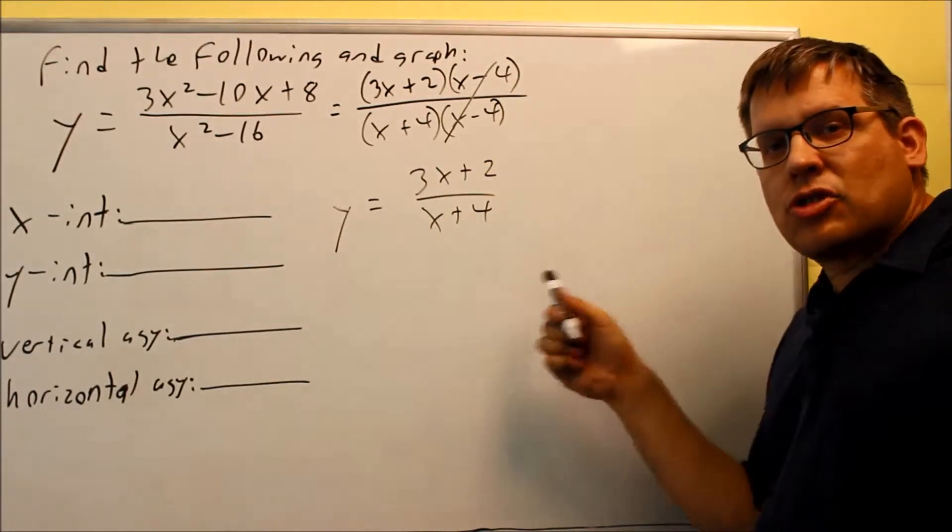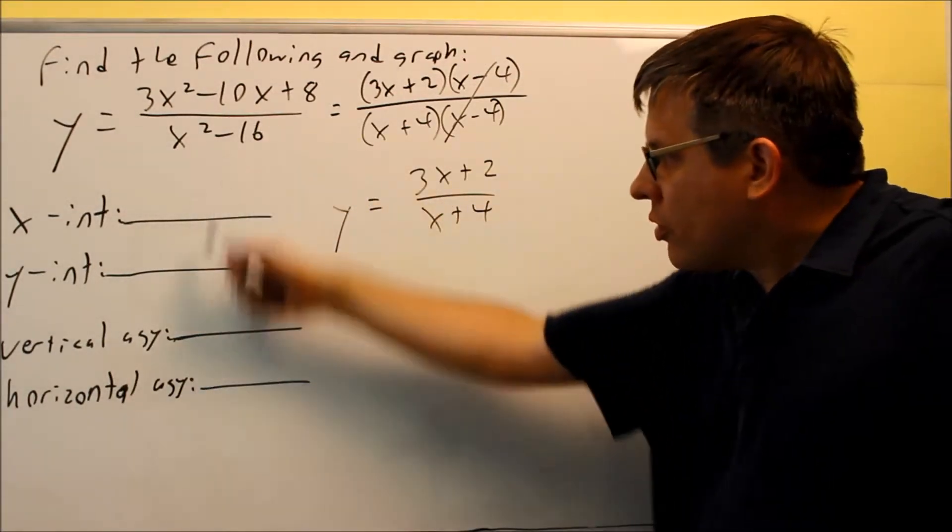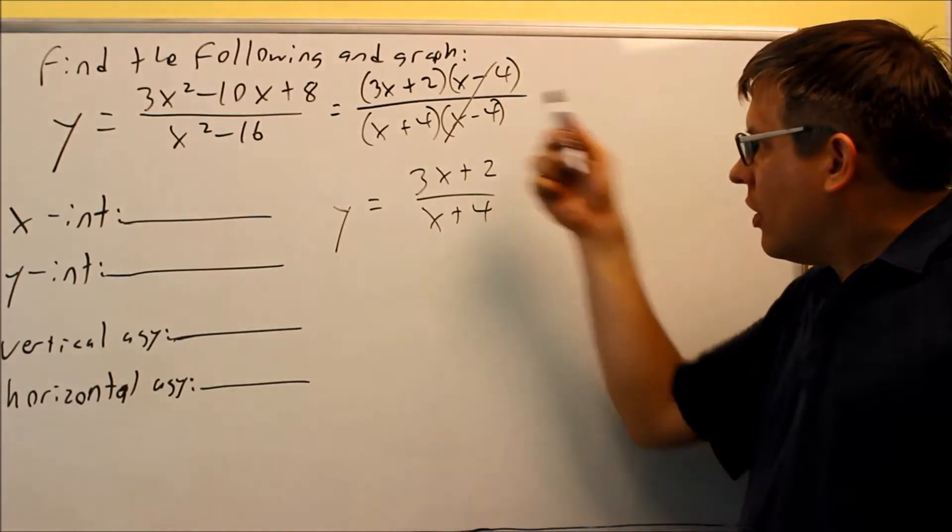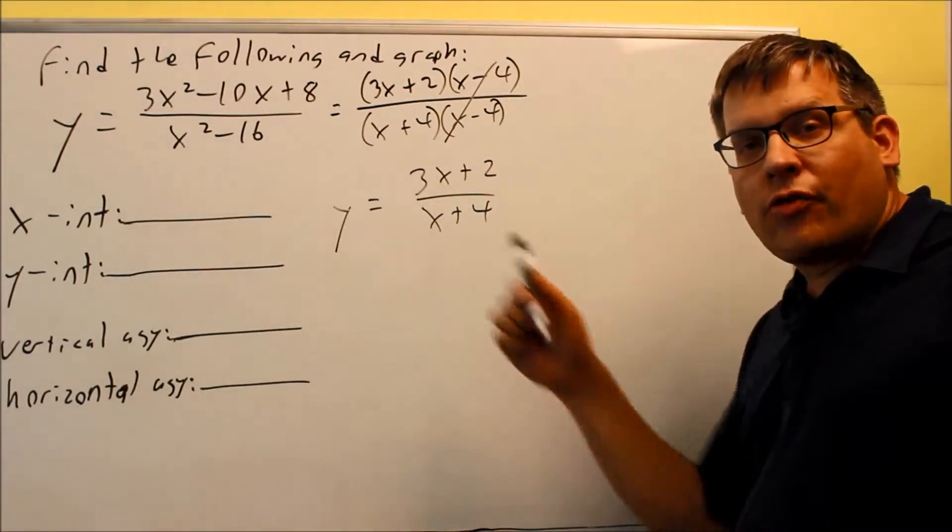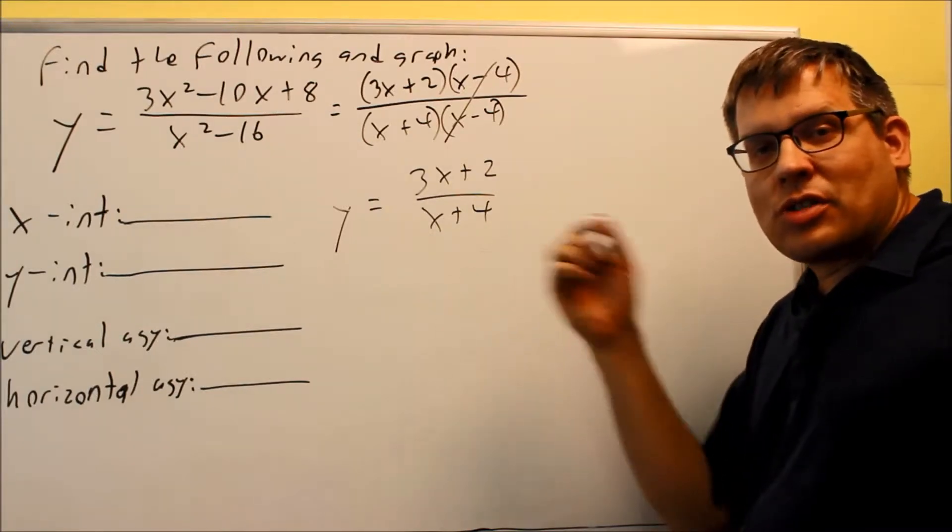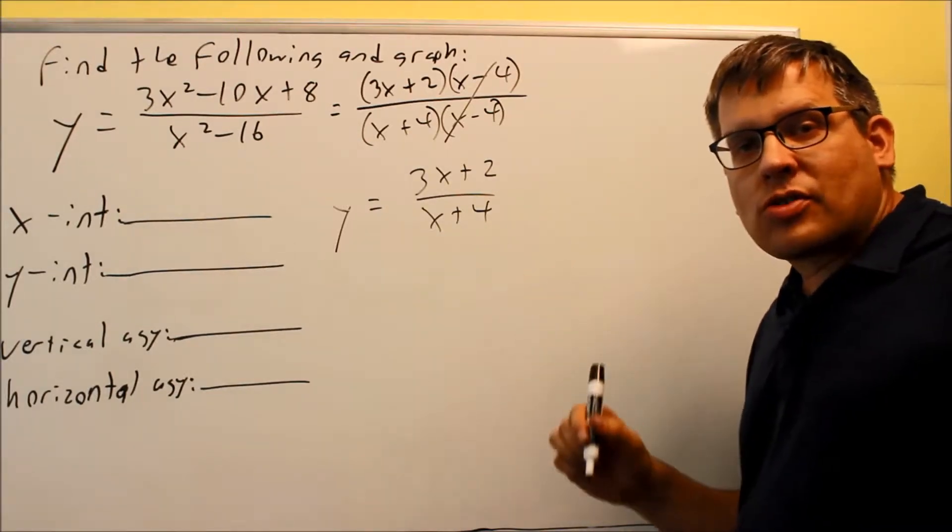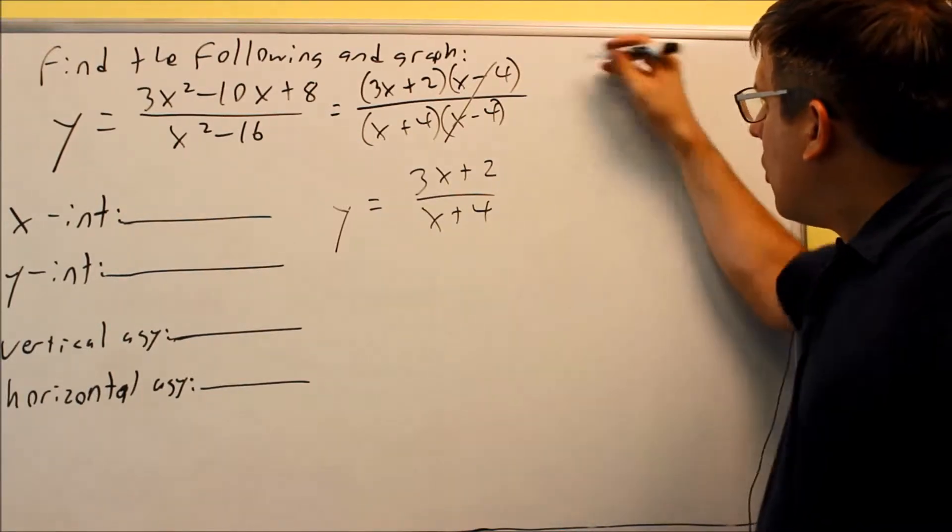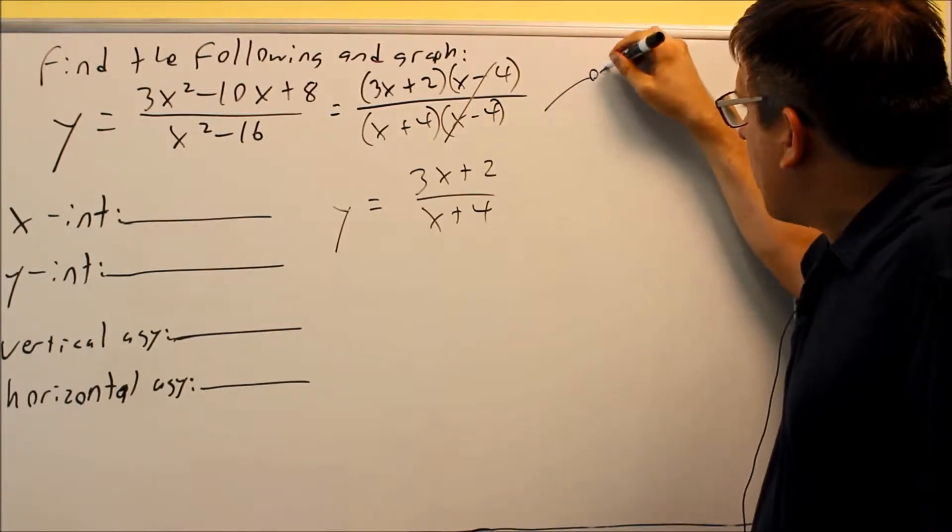However, the 4 that cancels out you don't want to forget about that one. Anytime you have a factor that cancels from the top and the bottom what you get is something that's called a hole. A hole would be something like this where the graph goes, you have an open circle and it keeps on continuing after that.